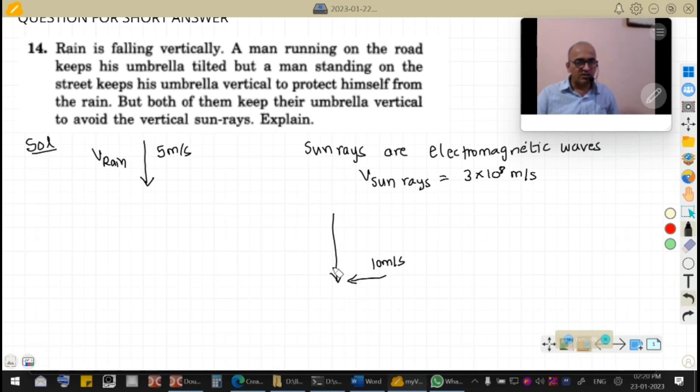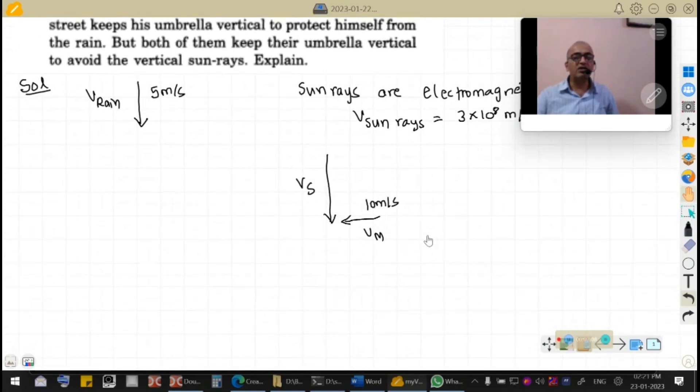So if this is v of sun rays and this is velocity of man, and if we try to see how he has to tilt to avoid sun rays, then what we will do: velocity of sun as seen by man is equal to velocity of sun minus velocity of man.